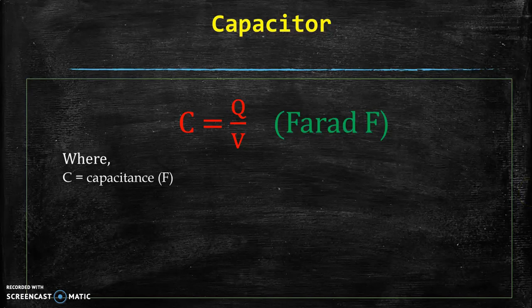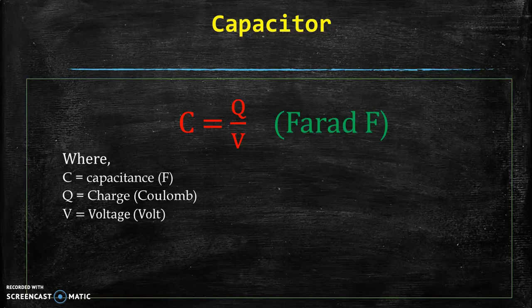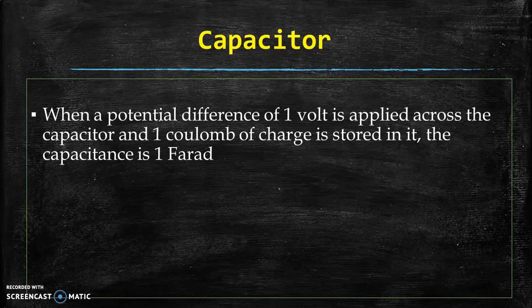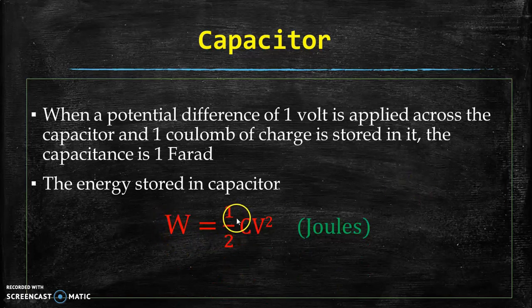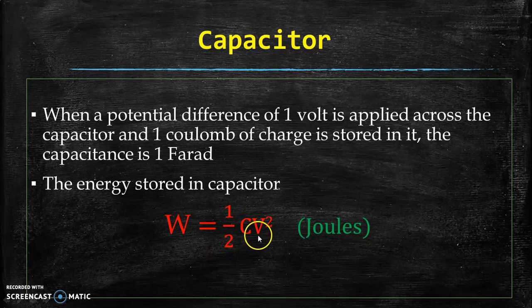C is capacitance, Q is charge with unit Coulomb, and V is applied voltage in volts. When a potential difference of one volt is applied across the capacitor and one coulomb of charge is stored in it, the capacitance is one Farad. The energy stored in a capacitor can be written as W, equal to one half C V squared, where C is capacitance and V is applied voltage. The unit of energy is joules.